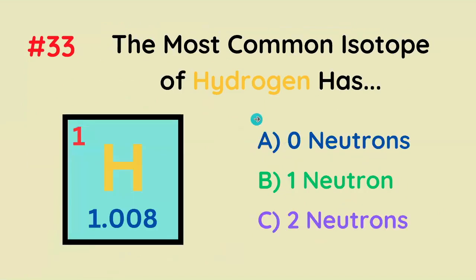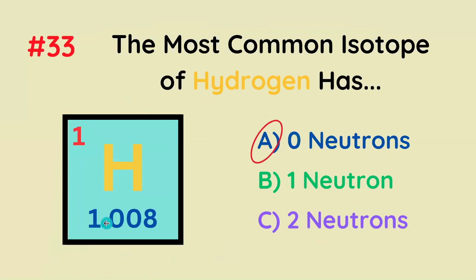The most common isotope of hydrogen has how many neutrons? It's going to be zero neutrons, because the most common isotope of hydrogen has exactly one AMU, and that AMU is from the proton. So there are no neutrons left over.